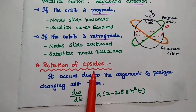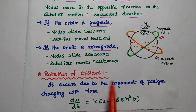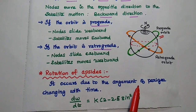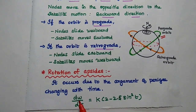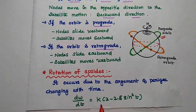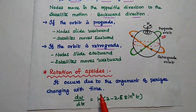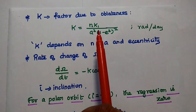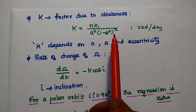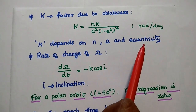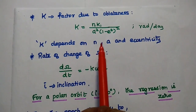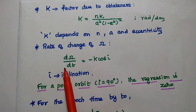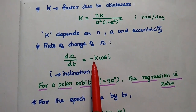The next one is rotation of apsides. It occurs due to the argument of perigee changing with time. The argument of perigee is the angle from the ascending node to the perigee point in the orbital plane. The rate of change is given as d(omega)/dt equals k times (2 minus 2.5 sin squared I), where k is the factor due to oblateness, given as n times K1 divided by A squared times (1 minus e squared) squared, measured in radians per day. The k value depends on n (mean motion), semi-major axis, and eccentricity. The rate of change of right ascension of the ascending node is d(Omega)/dt equals minus k times cos i, where i is the inclination of the orbital plane.